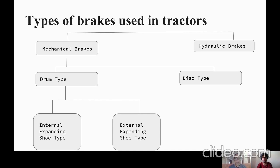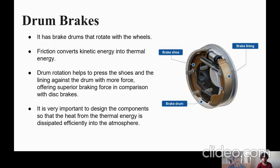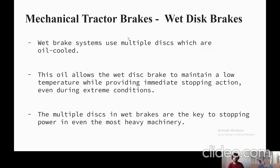Drum brakes have brake drums that rotate with the wheel. Multiple oil-cooled discs are used in wet brake systems. The oil allows wet disc brakes to maintain a low temperature while providing fast stopping action. Wet brakes use numerous discs, which are key to stopping even the heaviest machinery.